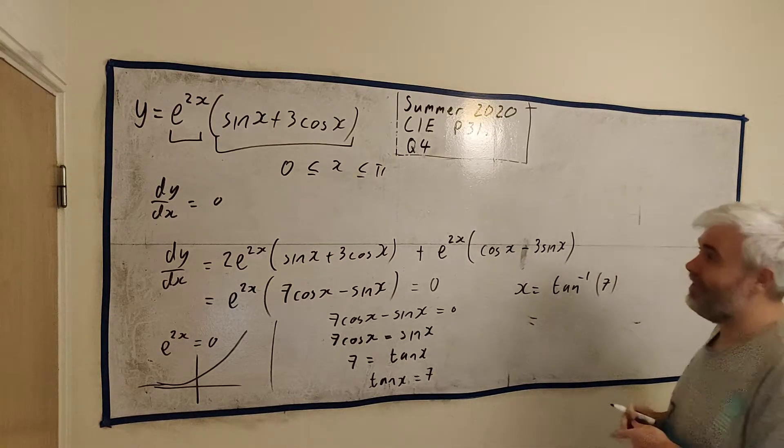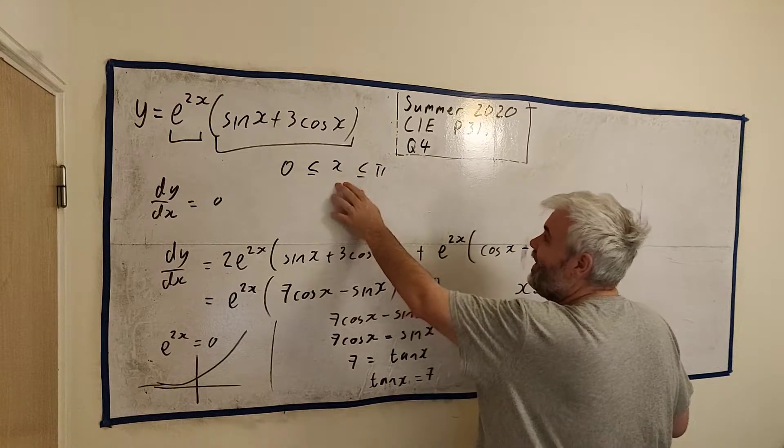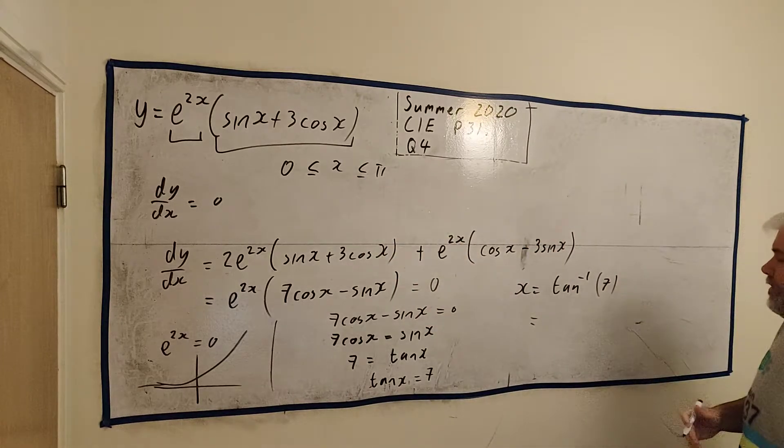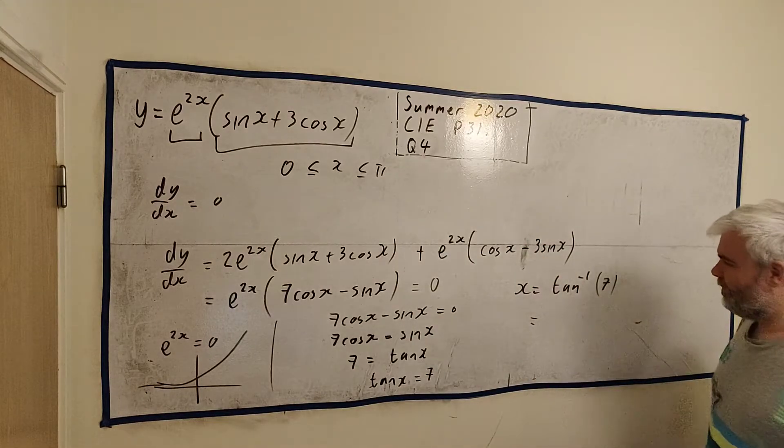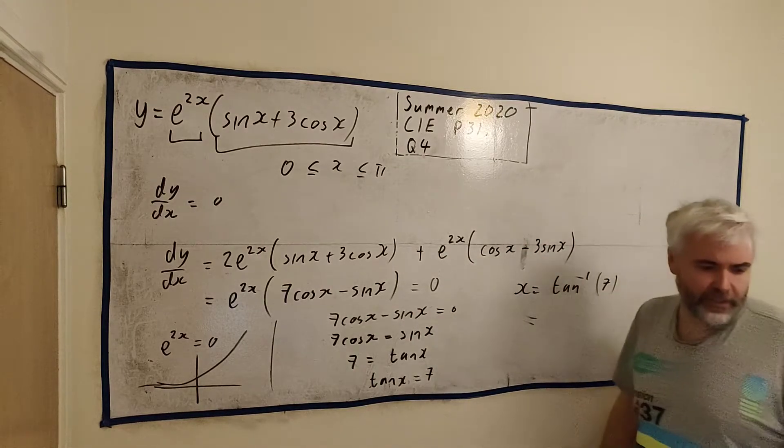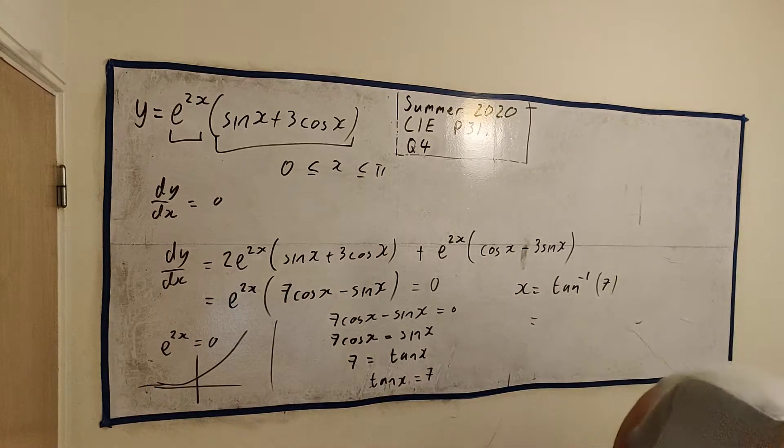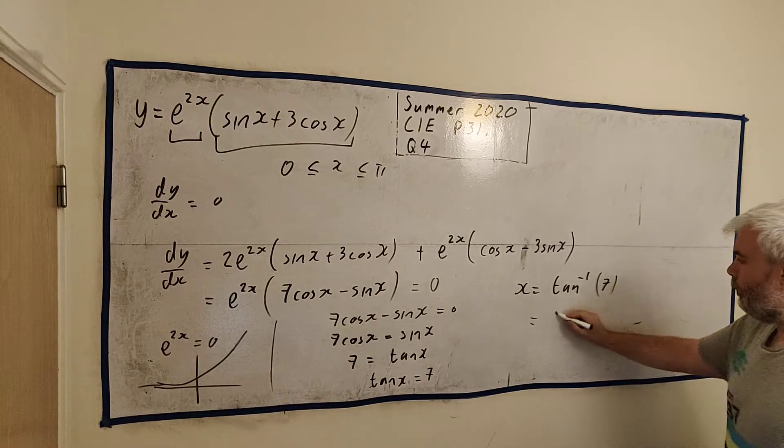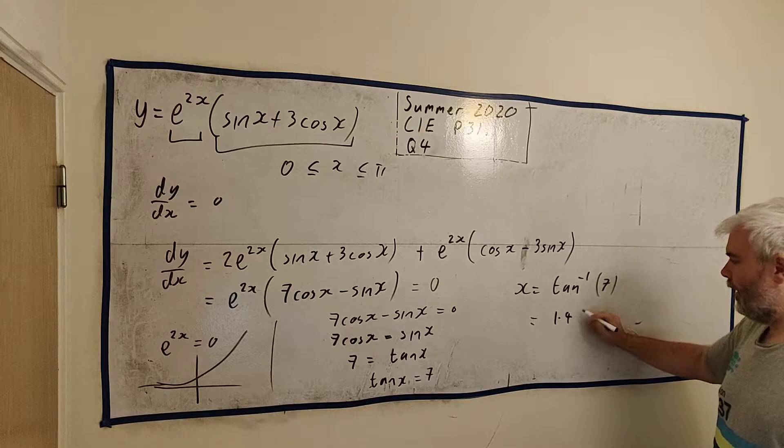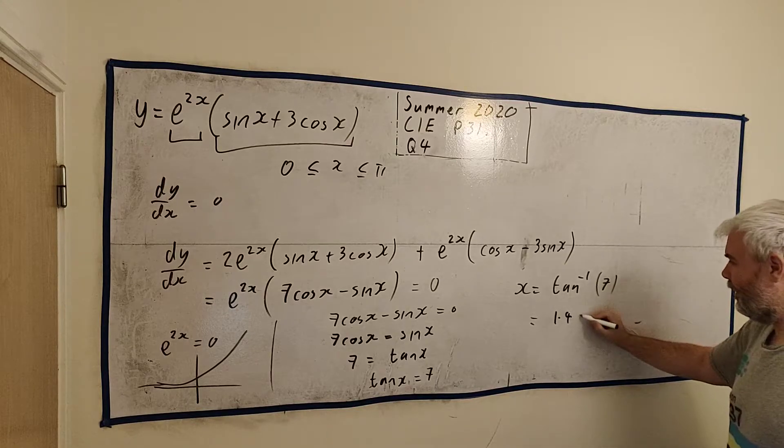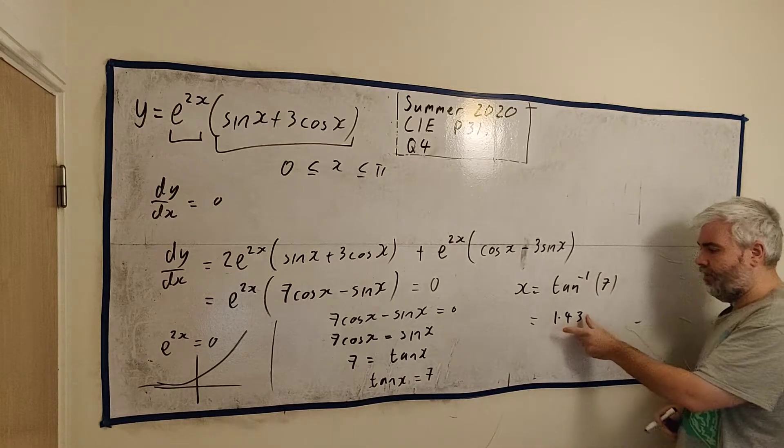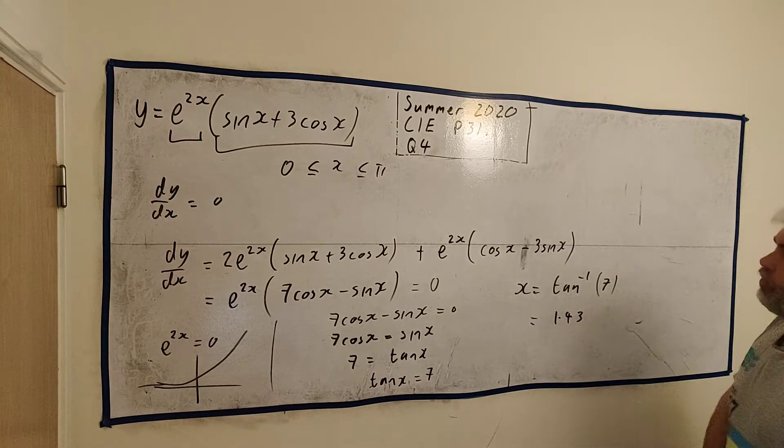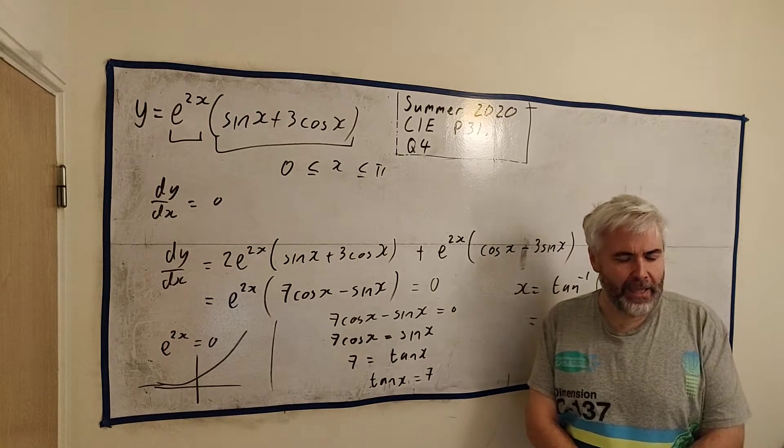Not between 0 and 3.14, or sorry, between 0 and 180. That would be in degrees. It's between 0 and pi. So make sure your calculator is in radians. And when we solve this, it would have come out as 1.42, 888 or something like that. And so to two decimal places, yes, they asked for two decimal places, 1.43. That is part A.